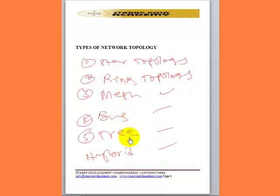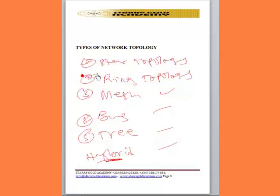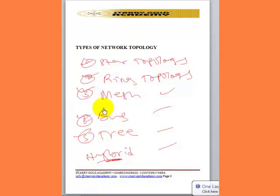When we have a combination of star and ring, or star and mesh, once we connect two or more topologies together, that type is called hybrid topology. Technically, the five types of topology are: star topology, ring topology, mesh topology, bus topology, and tree topology. We will now take them one by one and look at their definitions, diagrams, advantages, and disadvantages.